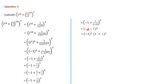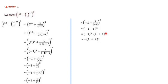From the two terms (-1 - i), we can take -1 as common. That gives (-1)^3 × (1 + i)^3. Since (-1)^3 = -1 (odd power), we write -(1 + i)^3.